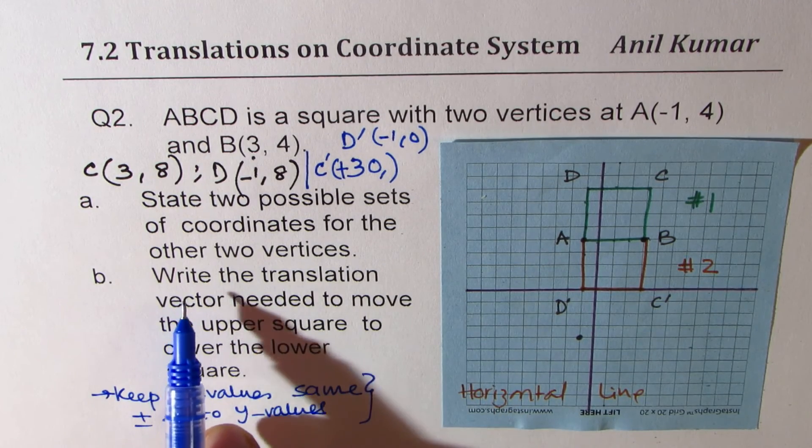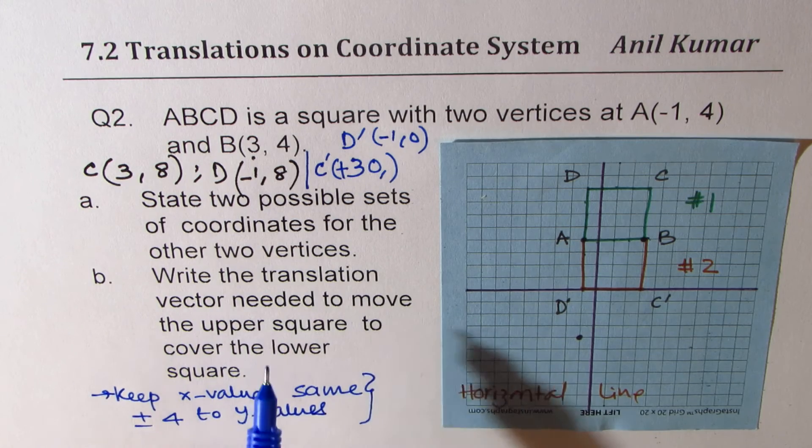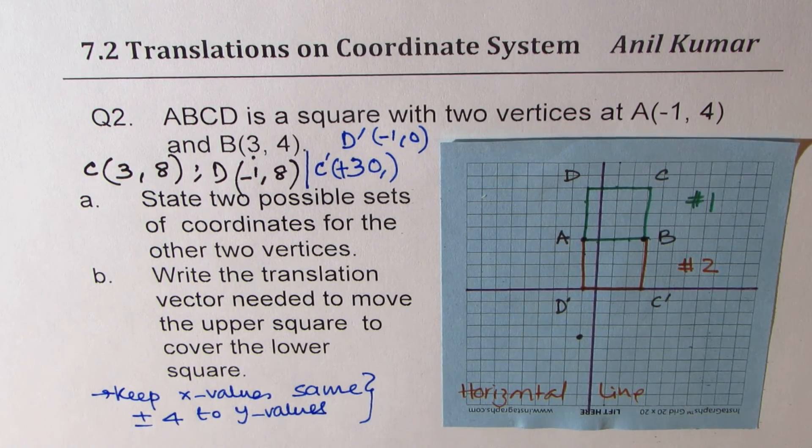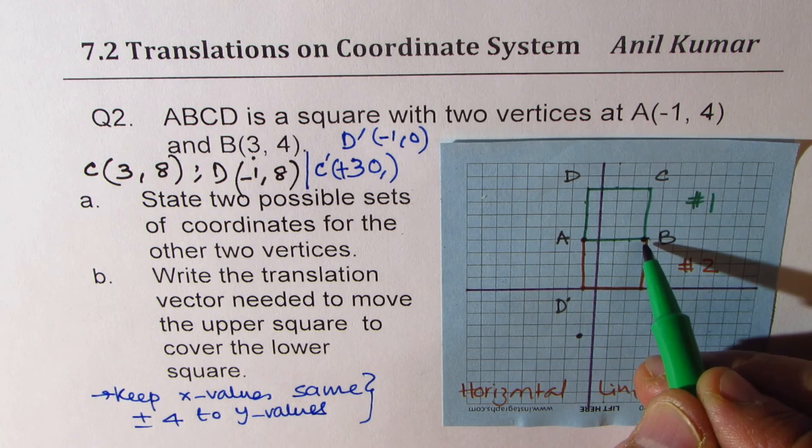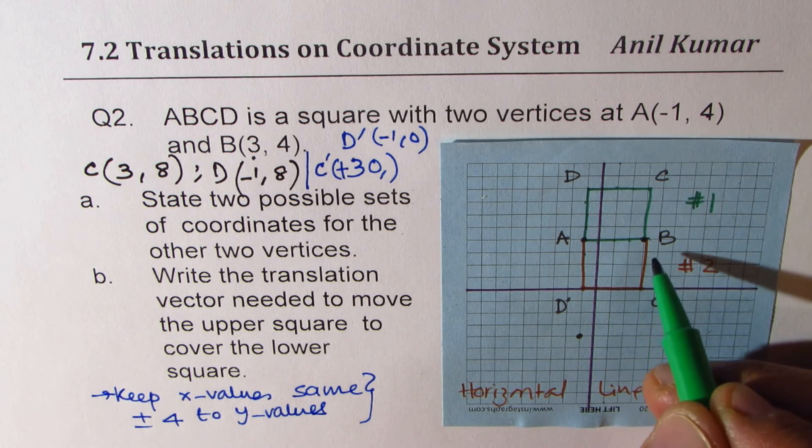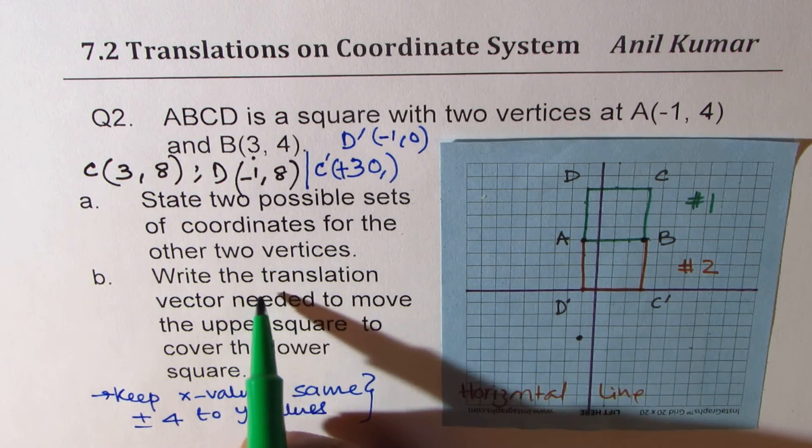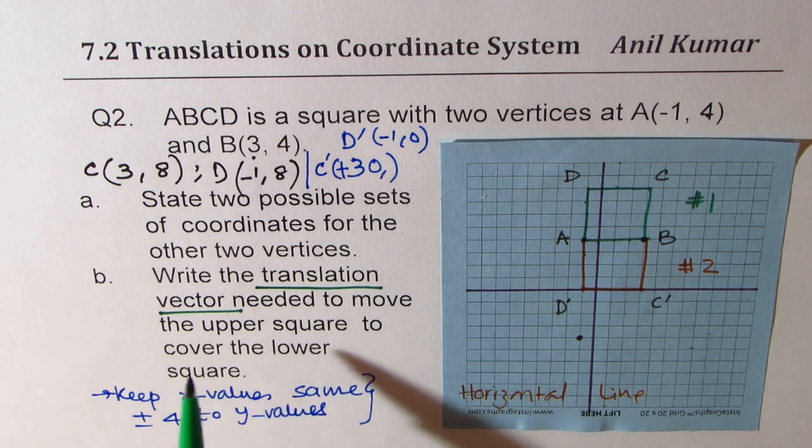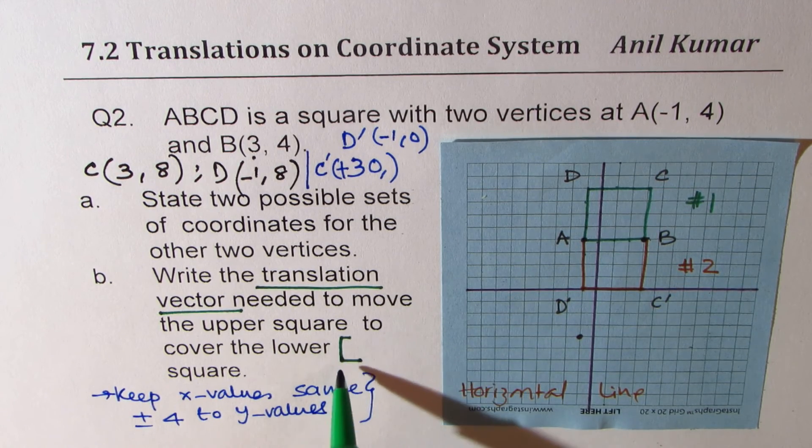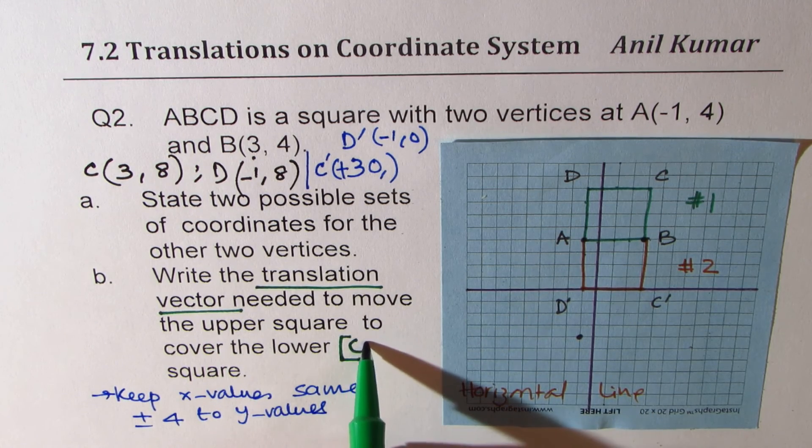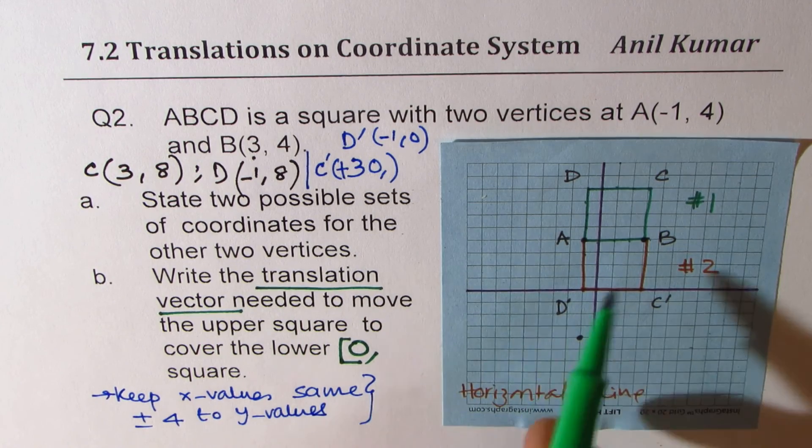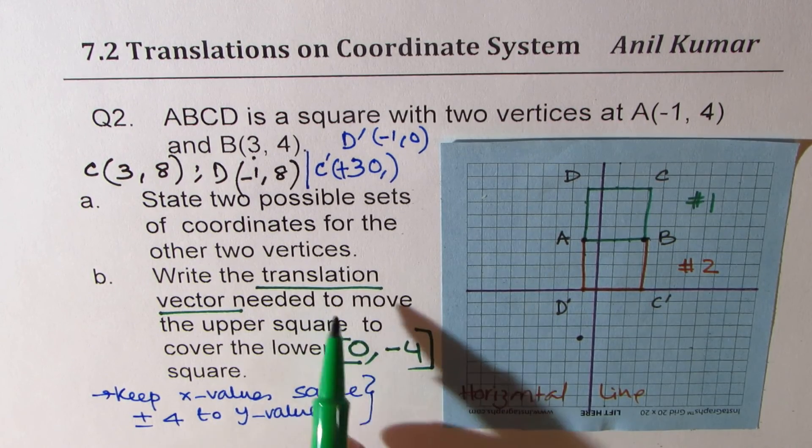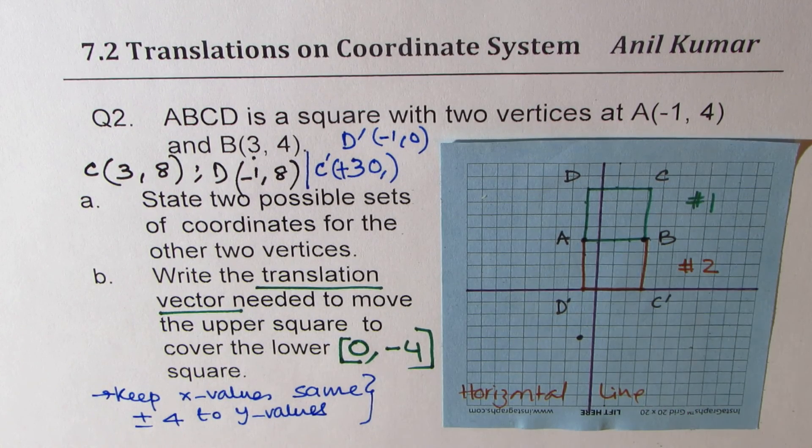Now part B is write the translation vector needed to move the upper square to cover the lower square. So what you have to do, if you start with the upper square, you have to move four units down. You don't have to go left or right. So the translation vector should be what? Since you are not moving in X direction, you have to write within square brackets, X value, no change. The Y value come down by four. So [0, -4]. So that becomes the translation vector to cover the second square.